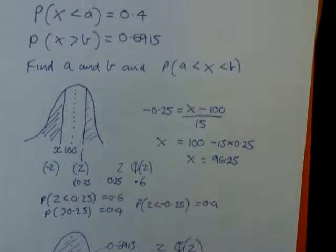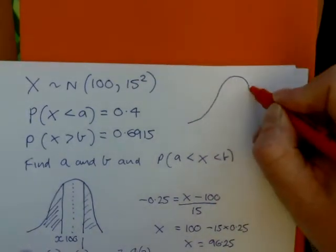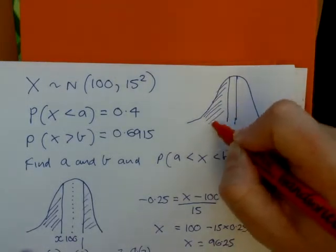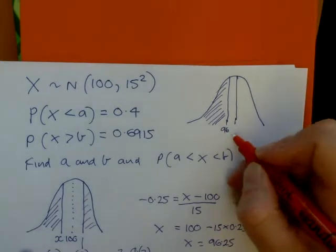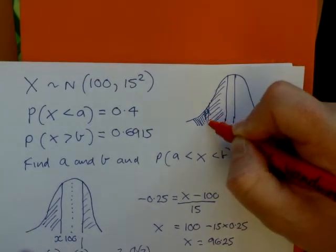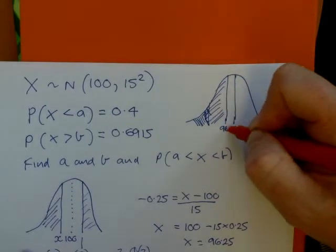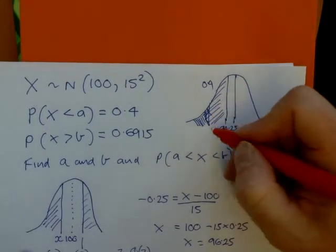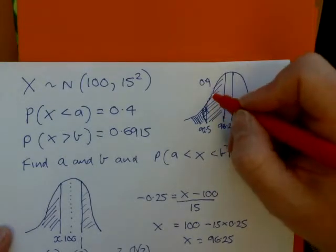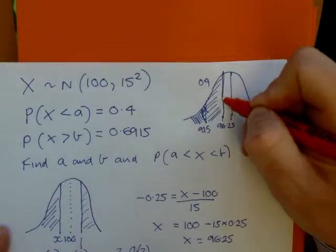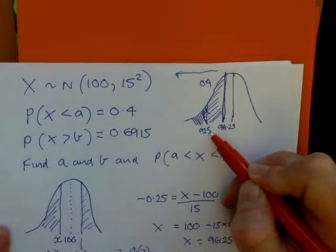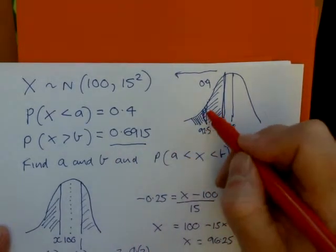I'll show you that now. We've got the numbers right up to the top. So we know that it's 0.4 below this value. And we know being above 92.5 is 0.6915. That's above it.